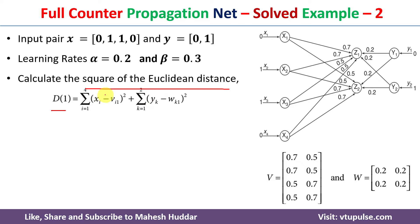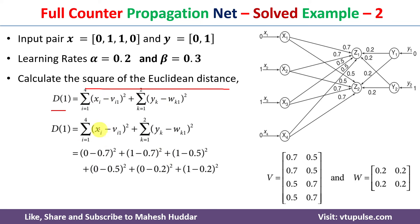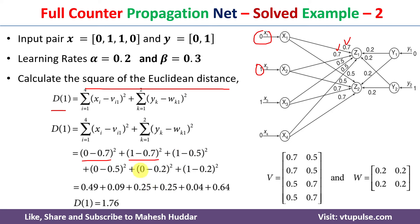Now we substitute the values. When i=1: (x1 minus v11) — x1 is 0 and v11 is 0.7. When i=2: (x2 minus v21) — x2 is 1 and v21 is 0.7, as written here. Similarly we write the remaining values, and once you solve this equation you get d1 = 1.76.